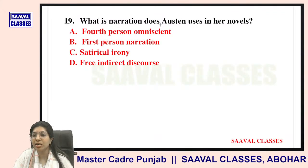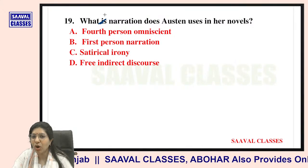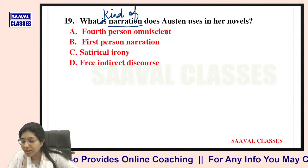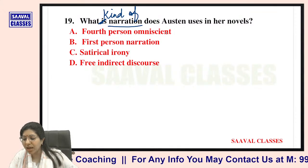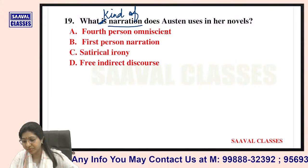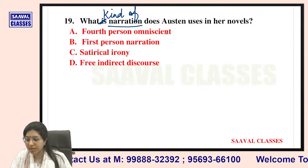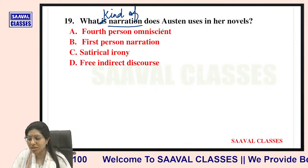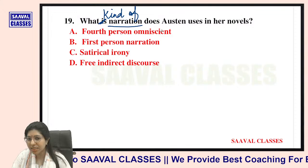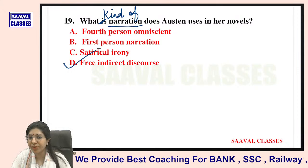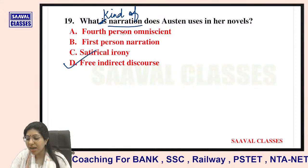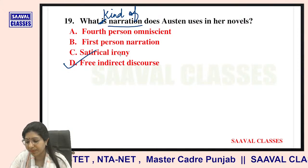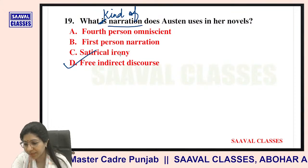Question number nineteen: What kind of narration does Austen use in her novels? Options are fourth person, first person, satirical irony, or free indirect discourse. The answer is free indirect discourse — each character speaks from their own perspective. Question number twenty: When was Northanger Abbey published? Options are during Austin's teen years, during her poverty, during her illness, or after her death. It was published posthumously — after her death.